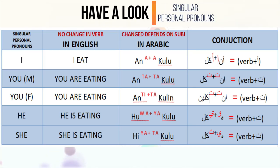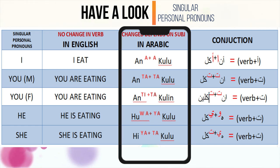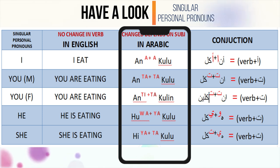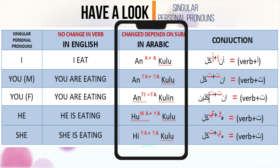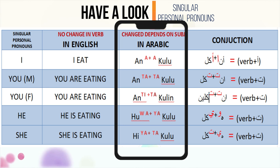Have a look. Ana ends with alif, and akulu starts with alif — A, A. And simply: ana akulu. Similarly, anta is with ta, and takulu starts with ta — ta, ta. And simply: anta takulu. Anti takuli — anta is with ta, and takuli starts with ta, anti takuli. And slightly: hua yakulu, and hiya takulu — ta is here for feminine.